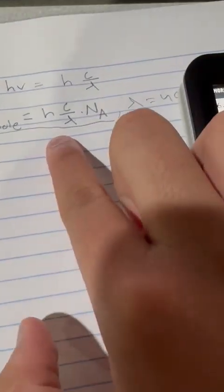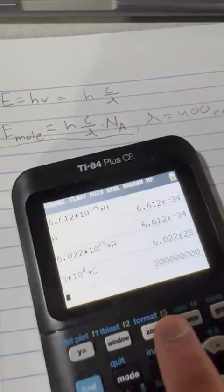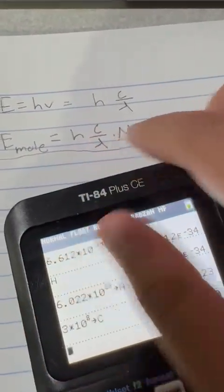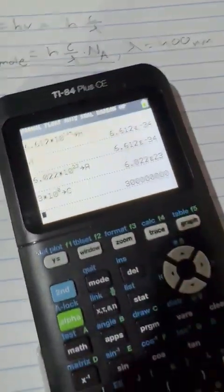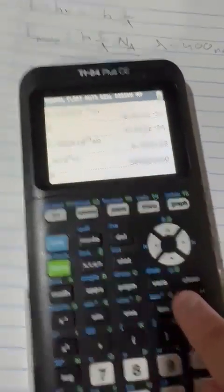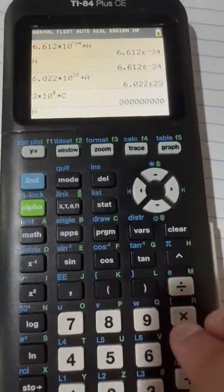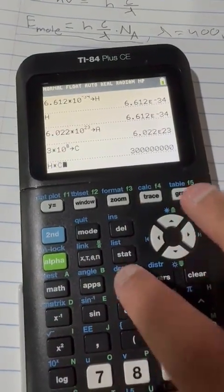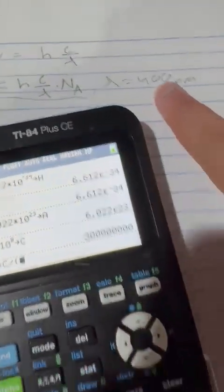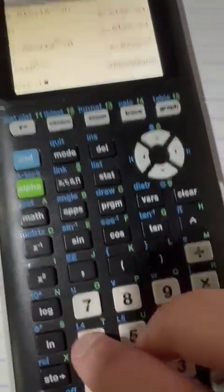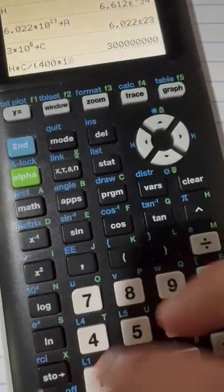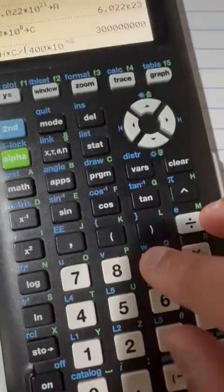And now we can plug in our equation over here. Hc over lambda times Avogadro's number. We can do that. H times C divided by our wavelength here is 400 nanometers, so 400 times 10 to the power of negative 9.